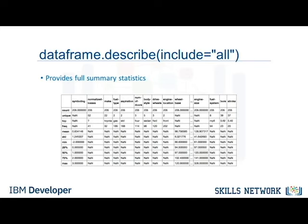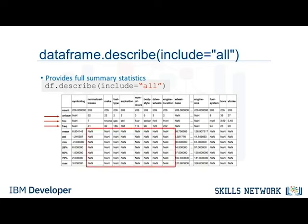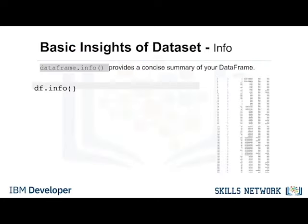To enable a summary of all the columns, we could add an argument include equals all inside the describe function bracket. Now the outcome shows the summary of all 26 columns, including object-typed attributes. We see that for object-type columns, a different set of statistics is evaluated, like unique, top, and frequency. Unique is the number of distinct objects in the column. Top is the most frequently occurring object, and frequency is the number of times the top object appears in the column. Some values in the table are shown as NaN, which stands for Not a Number, because that particular statistical metric cannot be calculated for that specific column data type. Another method you can use to check your dataset is the DataFrame.info function, which shows the top 30 rows and bottom 30 rows of the DataFrame.